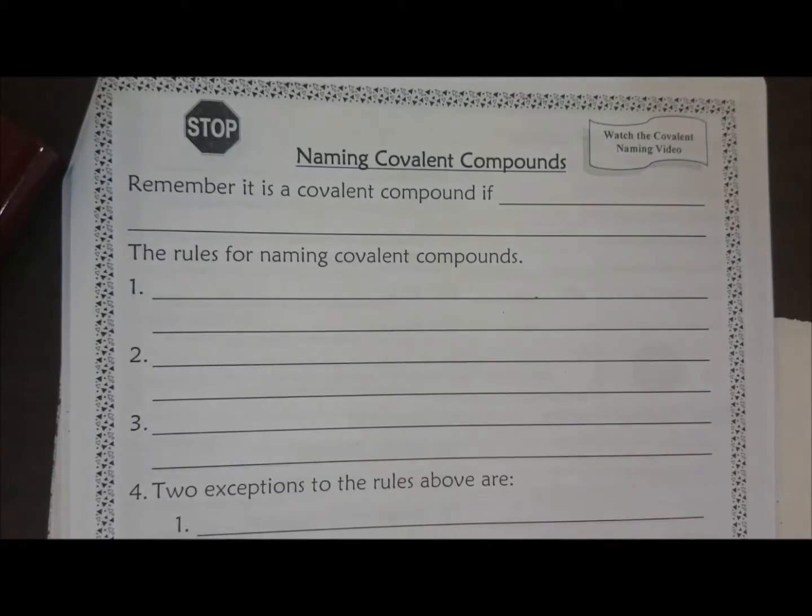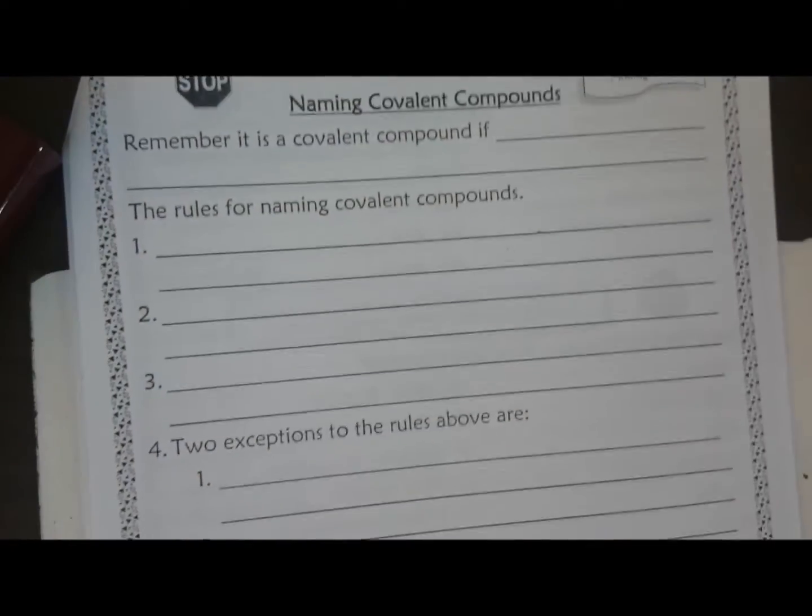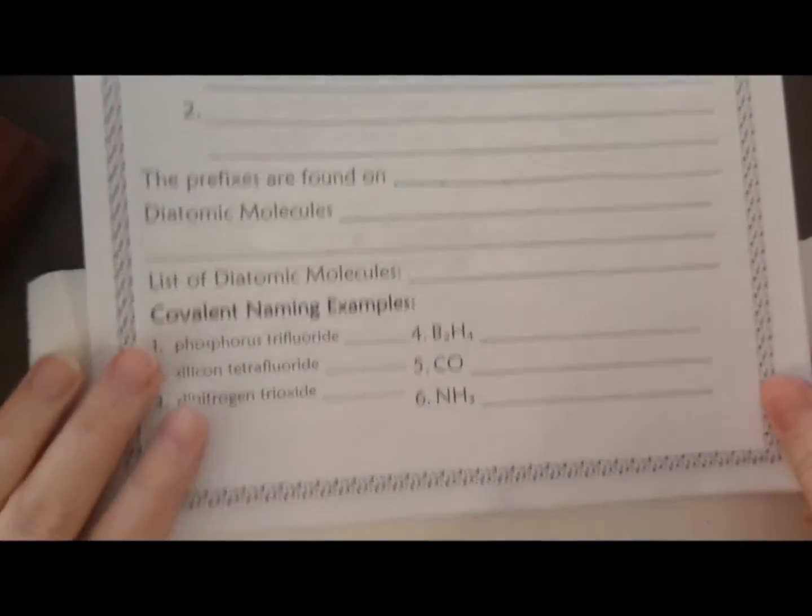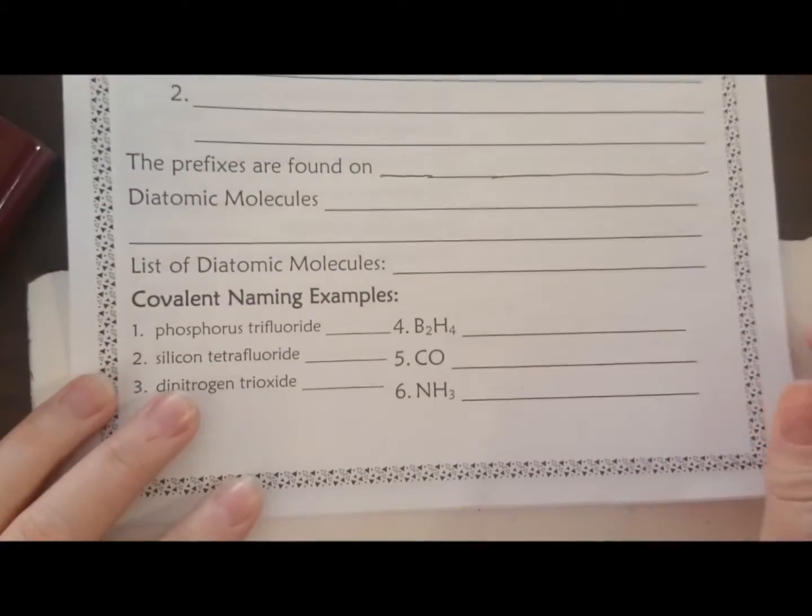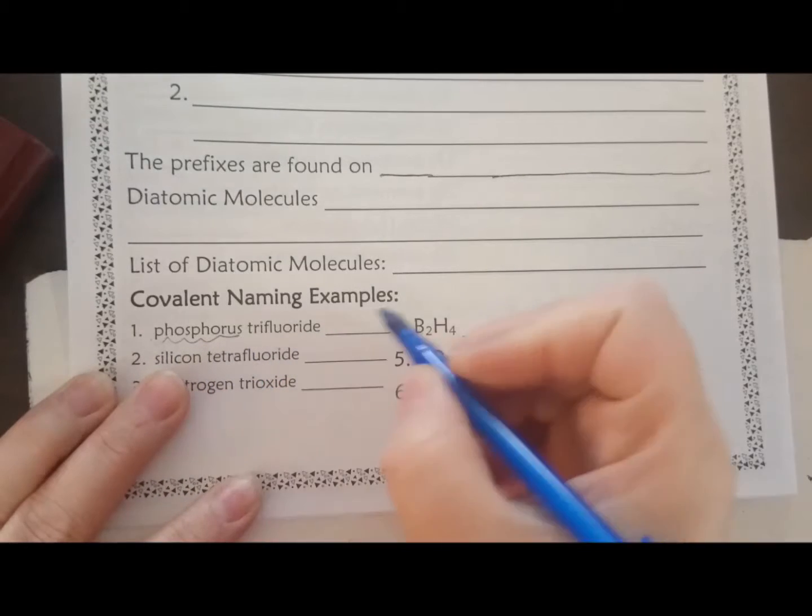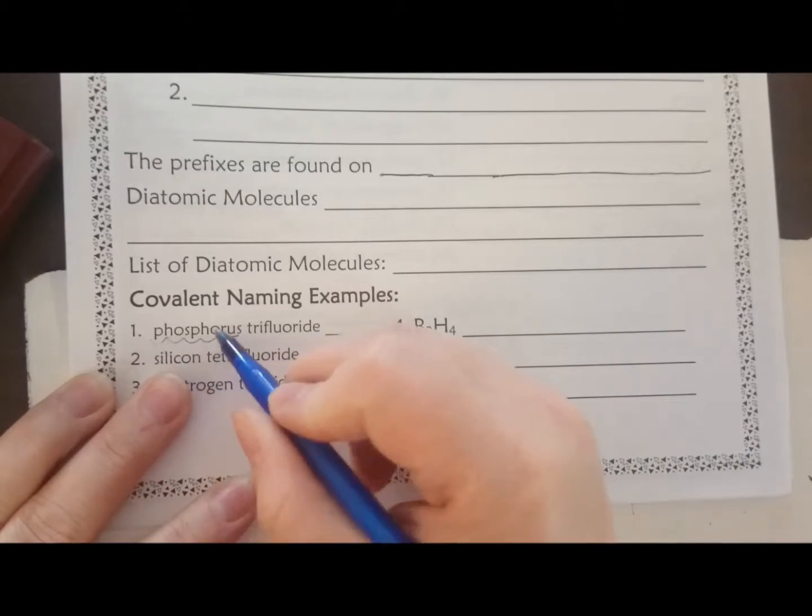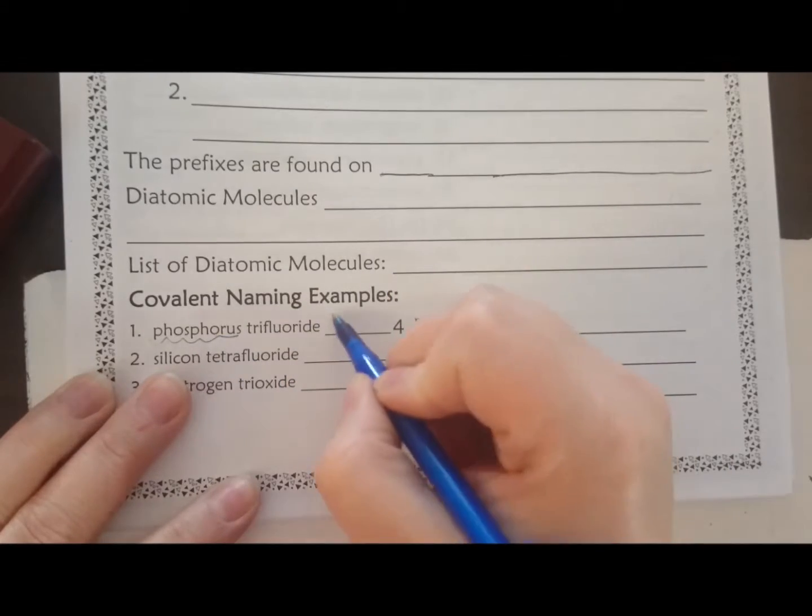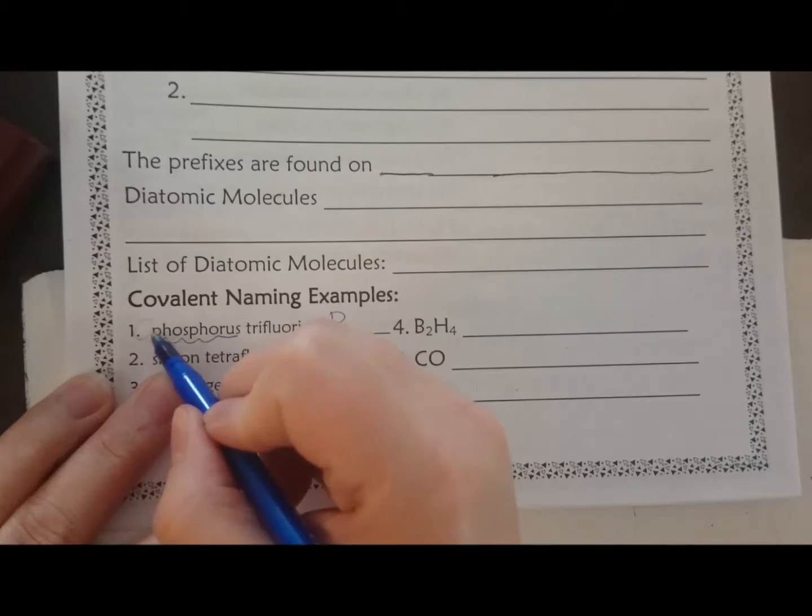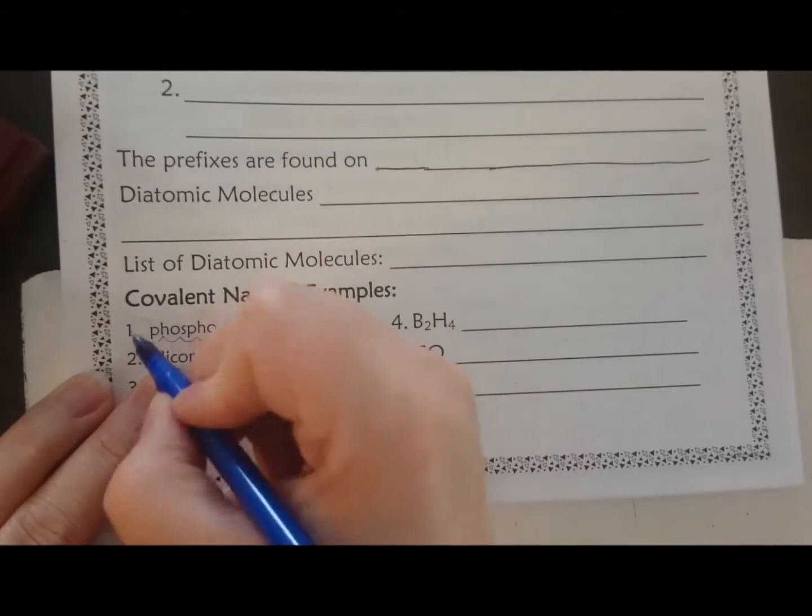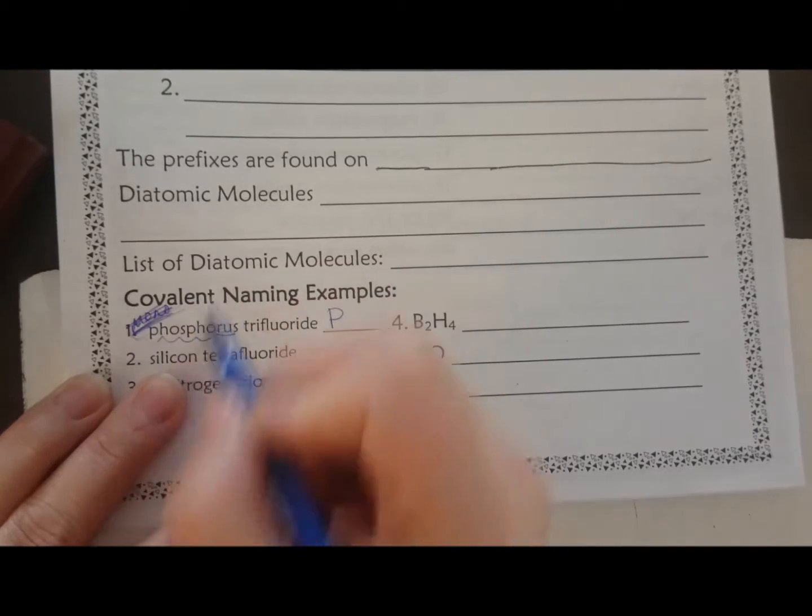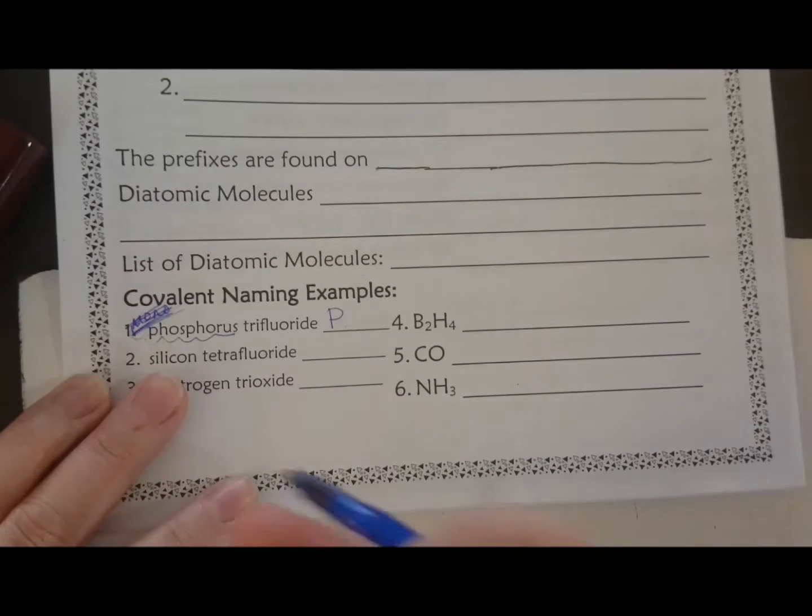Examples of covalent naming. So you have your list of rules above, but what you're going to do is take the first one and look that up if you don't know the symbol. Phosphorus is P. Now I know there's one P because it doesn't have a prefix. Remember, one of your exceptions to the rules is I don't have to write mono here because it's just assumed on the first one.